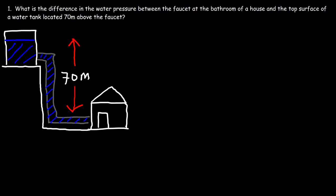Consider this problem. What is the difference in the water pressure between the faucet at the bathroom of a house and the top surface of a water tank located 70 meters above the faucet? So if we're given the height only, how can we calculate the difference in the water pressure between these two points, point A and B? Well, we know that pressure is defined as force over area, and the force is based on the weight force of the water above point B.